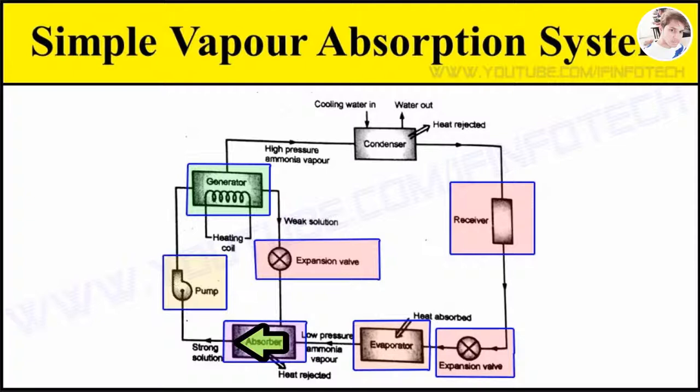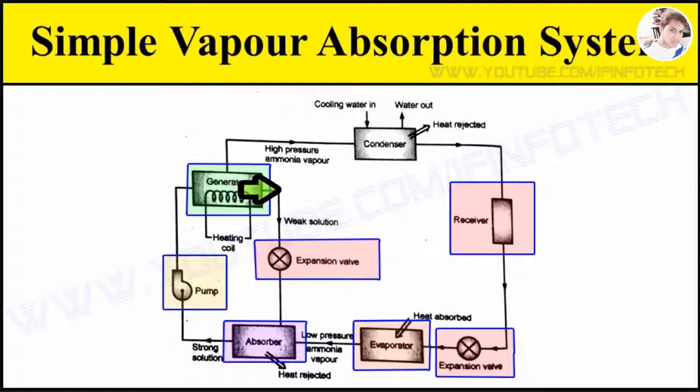The strong solution formed in the absorber is pumped to the generator by the liquid pump, which increases the pressure of the solution. The strong solution of aqua-ammonia in the generator is heated by some external source. During the heating process, ammonia vapor rises at high temperature and high pressure, leaving behind the hot weak aqua-ammonia solution in the generator.